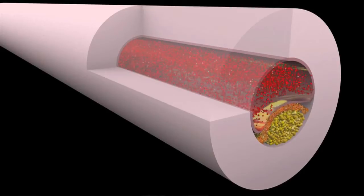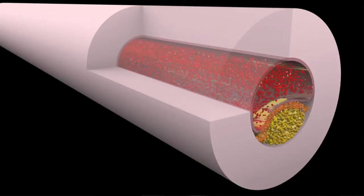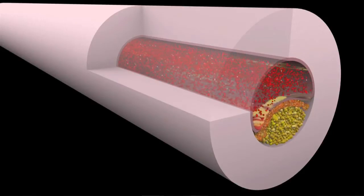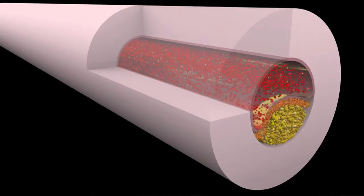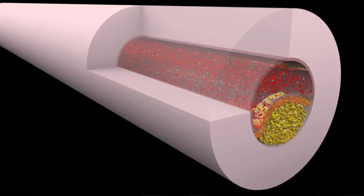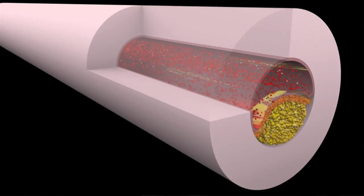So far, this plaque hasn't affected the flow of blood through the artery. But over time, that can change. The plaque can continue to grow, invading the space in the middle of the artery and slowing the flow of blood.